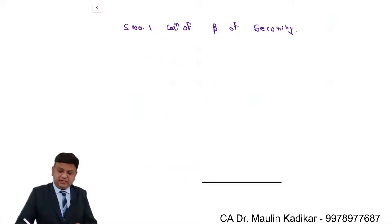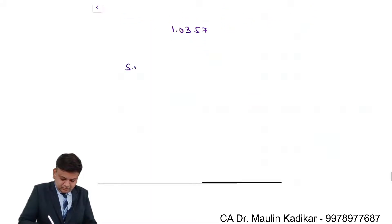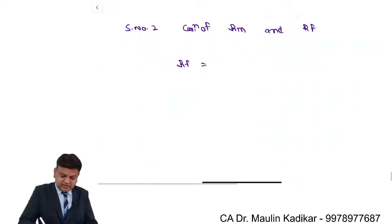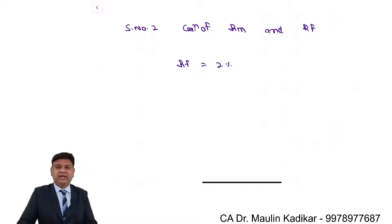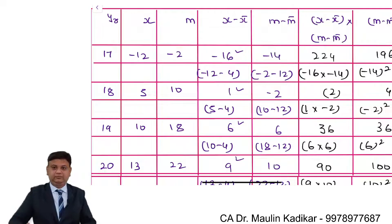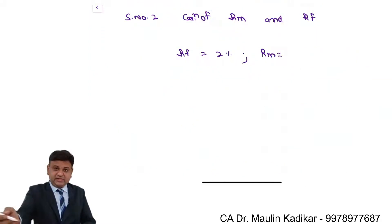Step number two: calculation of return on the market portfolio and risk-free rate of return. The risk-free rate of return is given to us directly in the question as 2 percent. As far as return on the market portfolio is concerned, we already computed M-bar in the process of calculating beta. The return on the market portfolio is 12 percent.